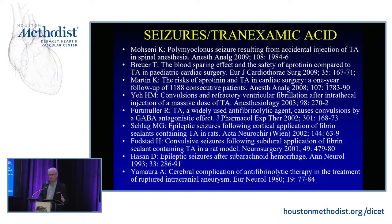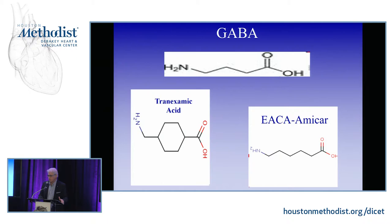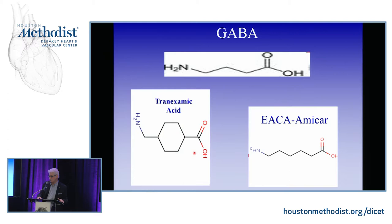Why does tranexamic acid produce seizures? Tranexamic acid actually looks a lot like gamma-aminobutyric acid — what the nervous system secretes, like benzodiazepines, to produce neurorelaxation. It's two carbons short, but the cyclic chair structure of tranexamic acid makes it look very much like GABA. Through that, and through glycine metabolism, the seizure mechanism may be important.